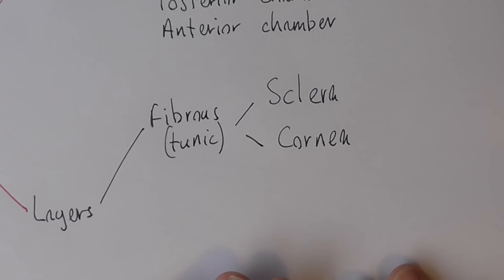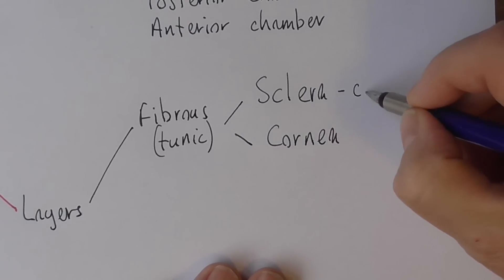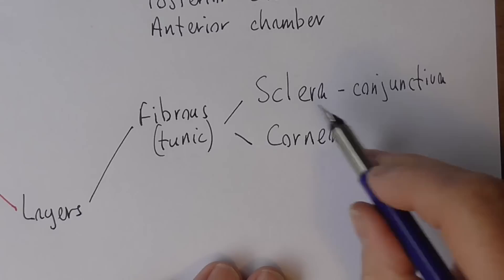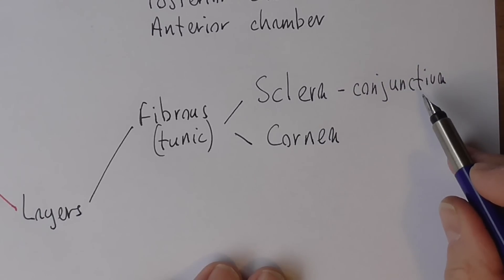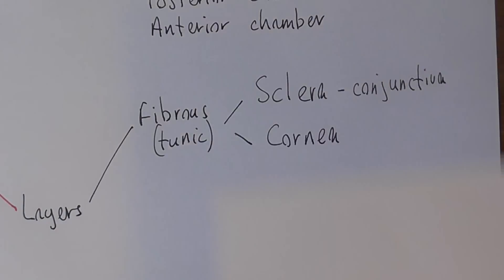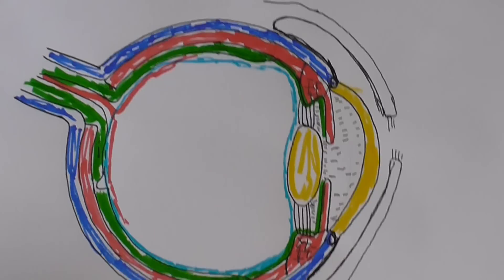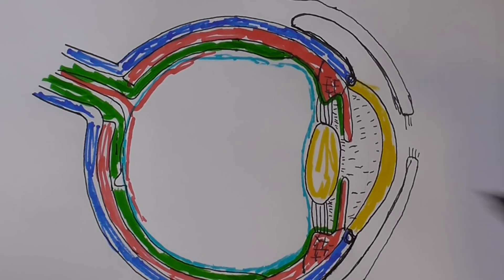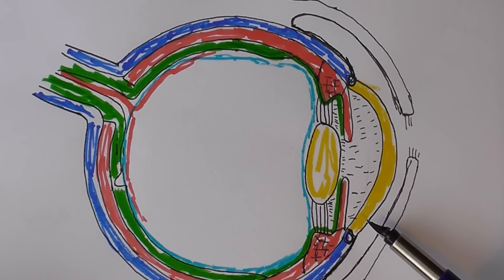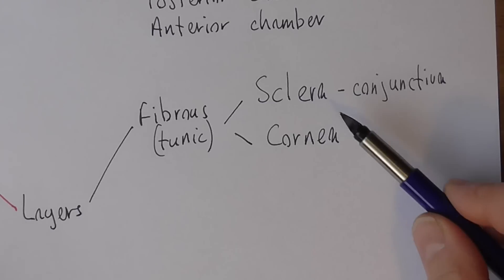External to the sclera we have the conjunctiva, which is also external to the sclera and lines the inside of the eyelids. So these are all part of the fibrous layer, as we can see on the diagram. The sclera is the outside fibrous layer shown in blue, but it's continuous with the cornea — it's just that the cornea is transparent, so we include it in this section.